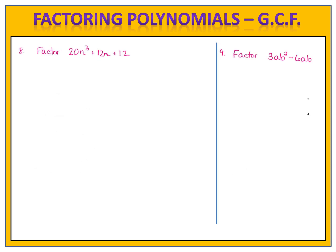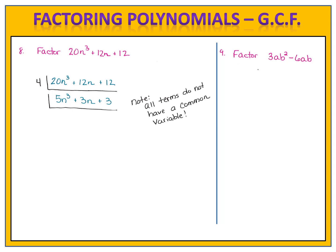Here are a couple of problems for you to try. Can you factor these two polynomials? Pause the video here. In exercise 8, we want to factor 20n to the third plus 12n plus 12. The largest number that divides 20, 12, and 12 is 4. So we factor out a 4 and divide each term by 4. Re-inspecting the numbers 5, 3, and 3, there's no number larger than 1 that divides all three. Now looking at variables, we have n to the third, n to the first, and then no n's at all. Because all three terms don't have n's, we cannot factor out any n's. Our polynomial in factored form is simply 4 times 5n to the third plus 3n plus 3.